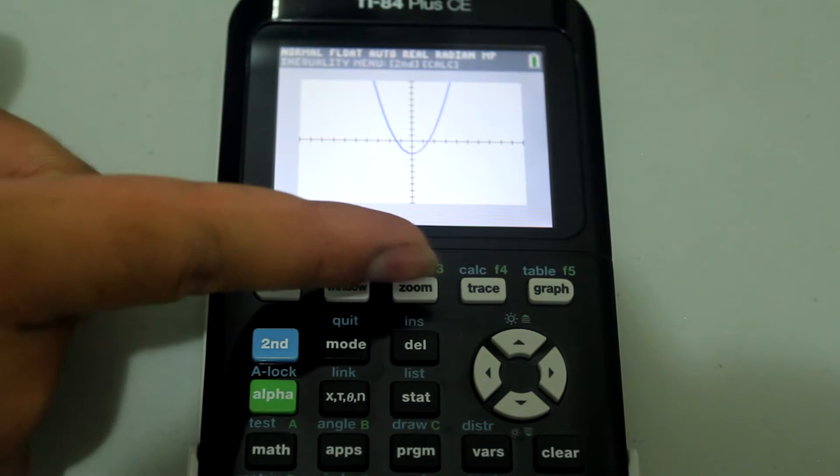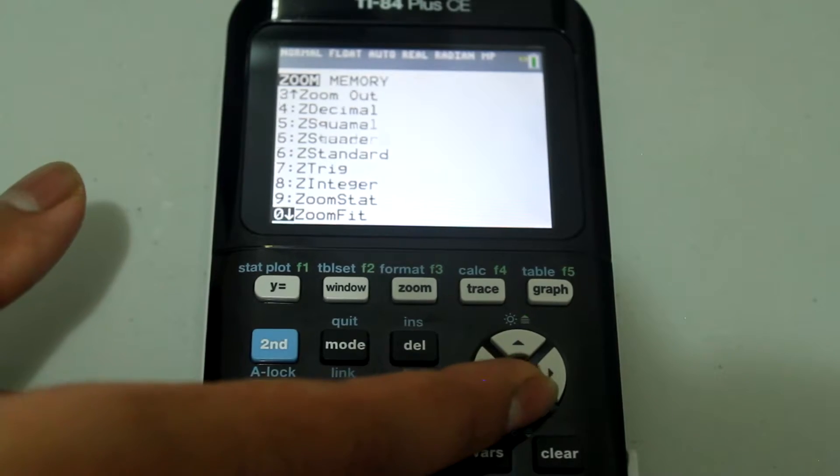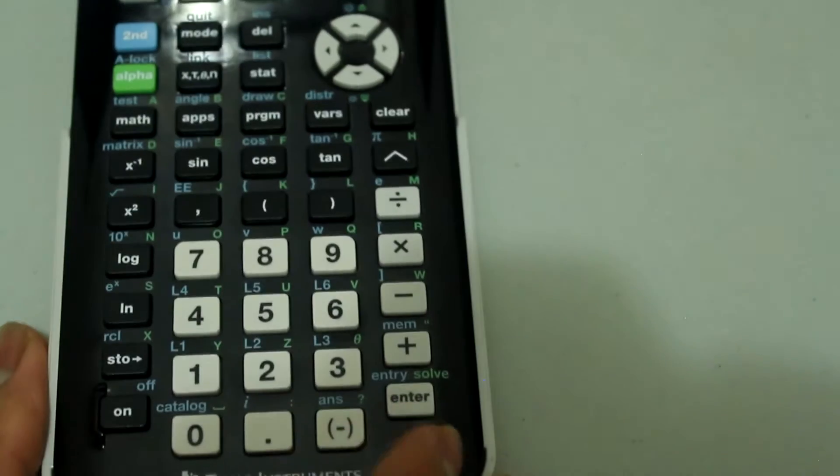And now if you go to zoom and arrow down until you see Z quadrant 1 and then press enter,